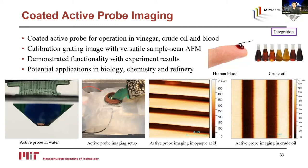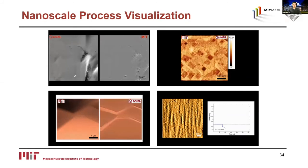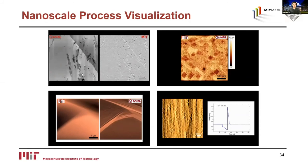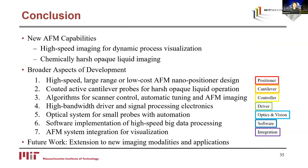Here is a summary of chemical reaction processes that have been visualized in the Mechatronics Research Lab using the high-speed AFM developed in our group, including selected examples of etching and electrochemical deposition. To summarize, this work enables high-speed imaging for dynamic process visualization and chemically harsh opaque liquid imaging. A low-cost educational AFM design is also discussed as an additional benefit. The new capabilities are demonstrated with imaging results, and the development of a custom AFM system is a comprehensive process broadly involving positioner, cantilever, controller, driver, optics and vision, software, and overall system integration. The development contributes to both the AFM user community and the precision instrumentation and mechatronics communities.